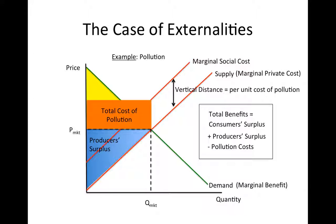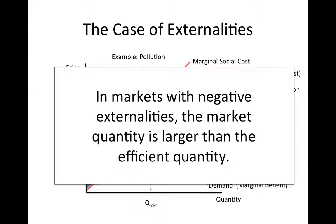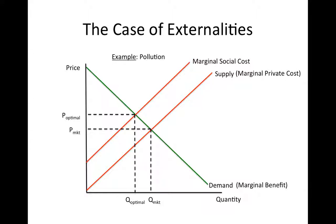Because pollution adds costs to everyone in the market, it is known as a negative externality. In markets with negative externalities, the market quantity is higher than the efficient quantity, because the market participants do not incorporate all of the costs of their activities into their decision. The optimal quantity of a good that generates negative externalities is where the marginal social cost curve crosses the demand curve. At this quantity, the price is higher, to reflect the cost of the externality.